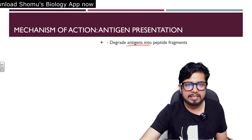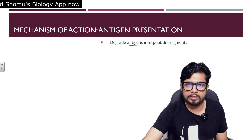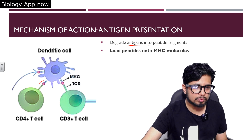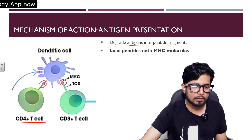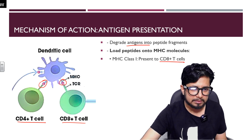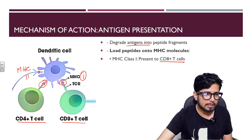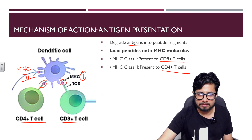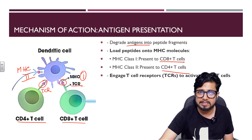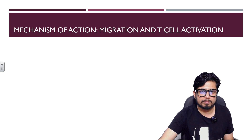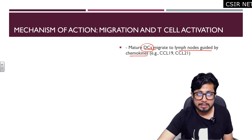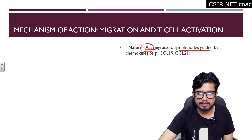For antigen presentation: dendritic cells degrade antigens into small peptide fragments and load them onto MHC class 2 molecules to present to CD4+ T cells, or onto MHC class 1 molecules to present to CD8+ T cells. The T cell receptor (TCR) engages these complexes. For migration and T cell activation: mature DCs migrate to lymph nodes guided by chemokines CCL19 and CCL21, which cause chemotaxis of dendritic cells toward the lymphatic system.